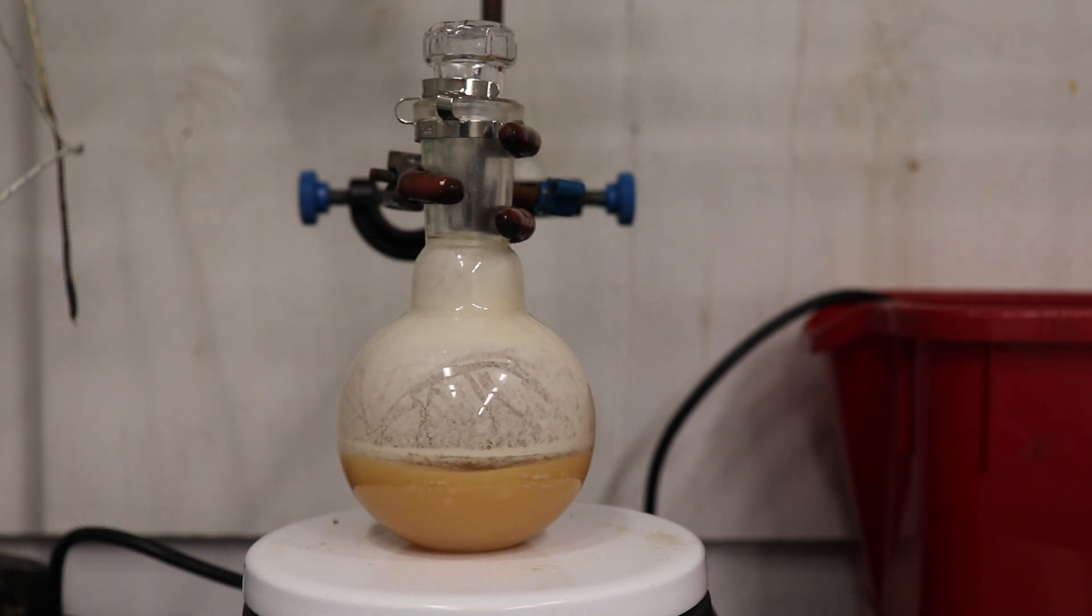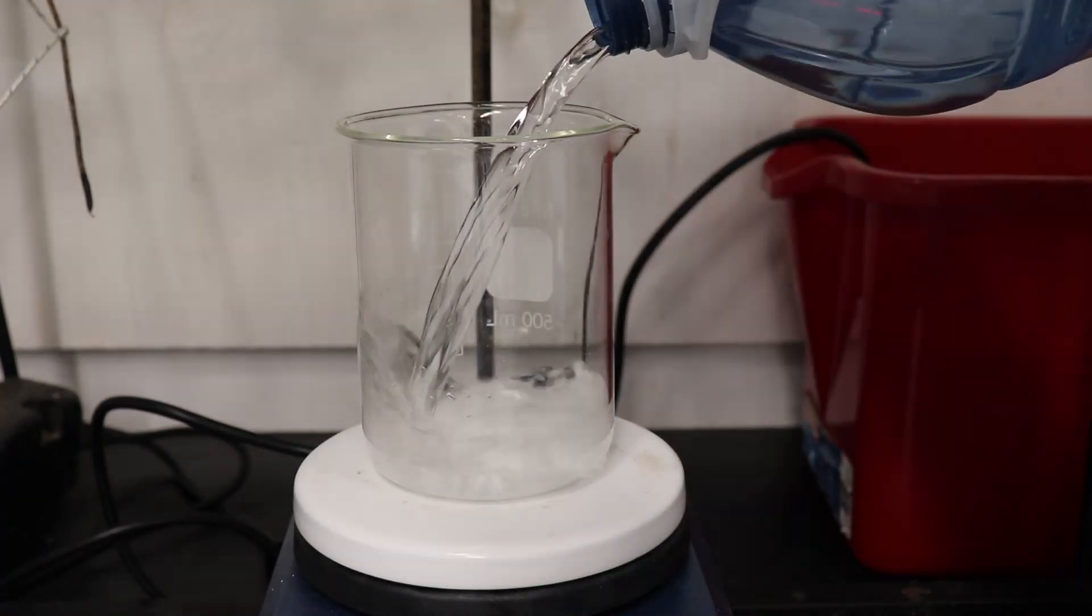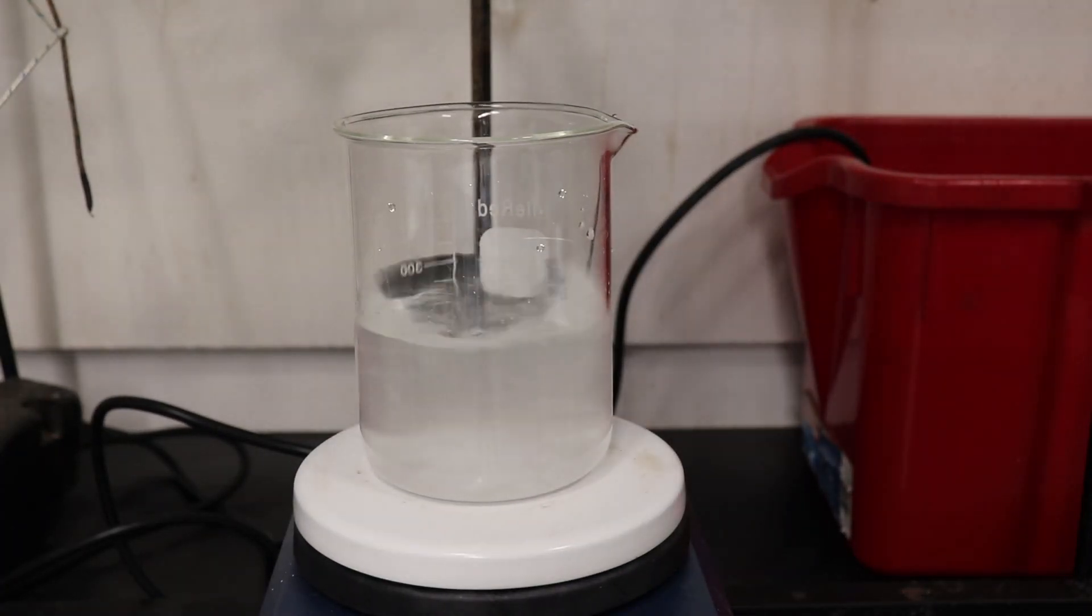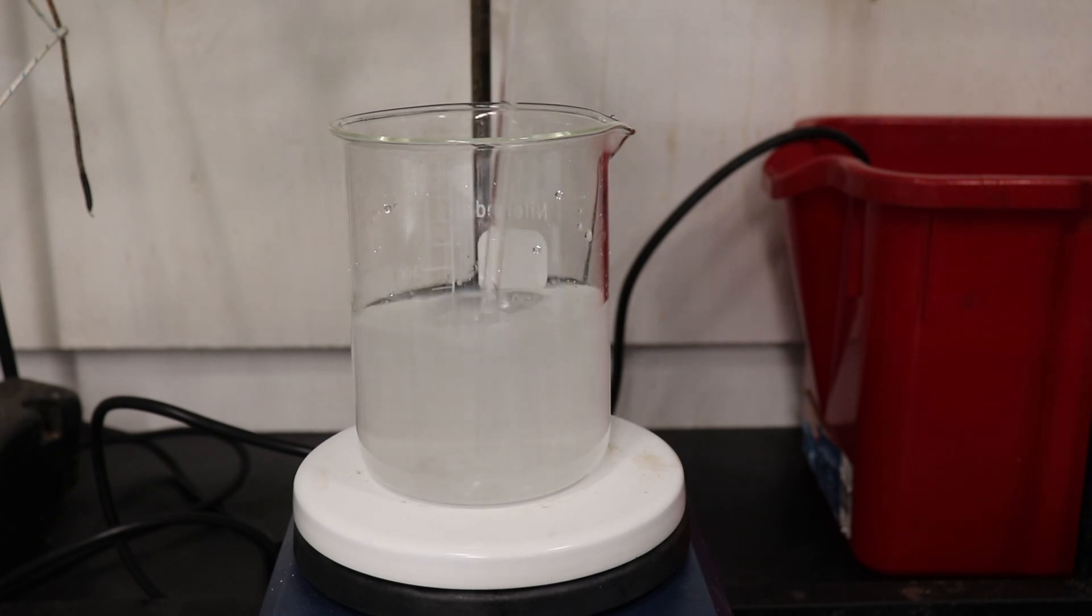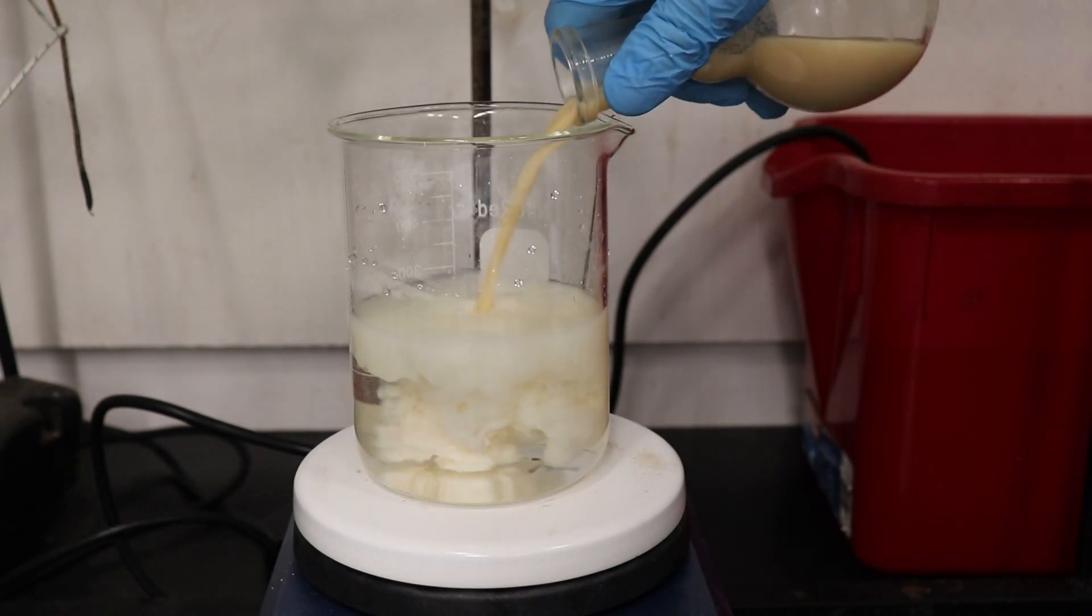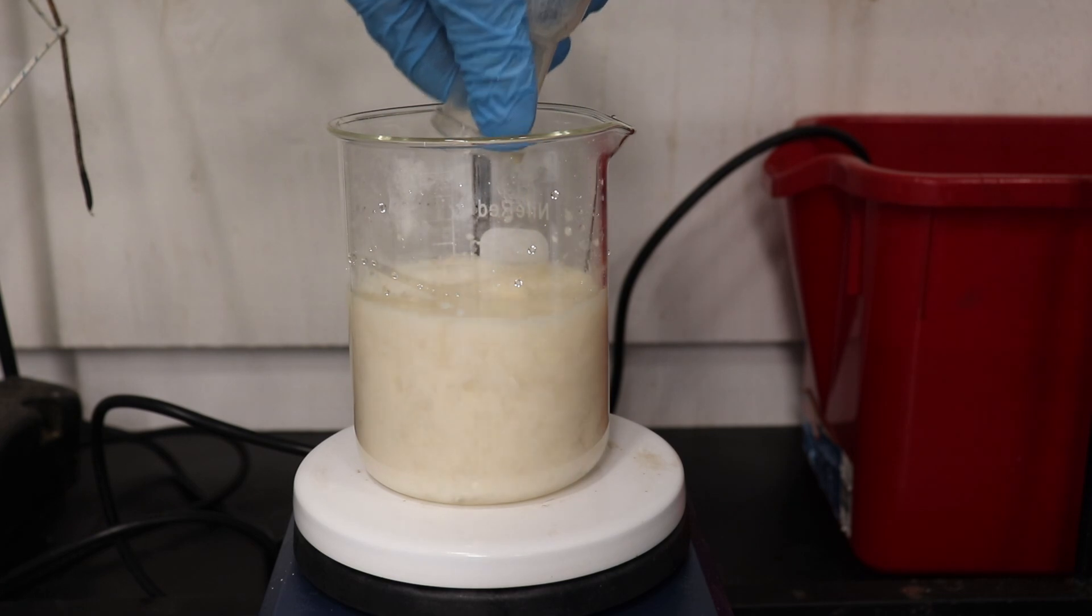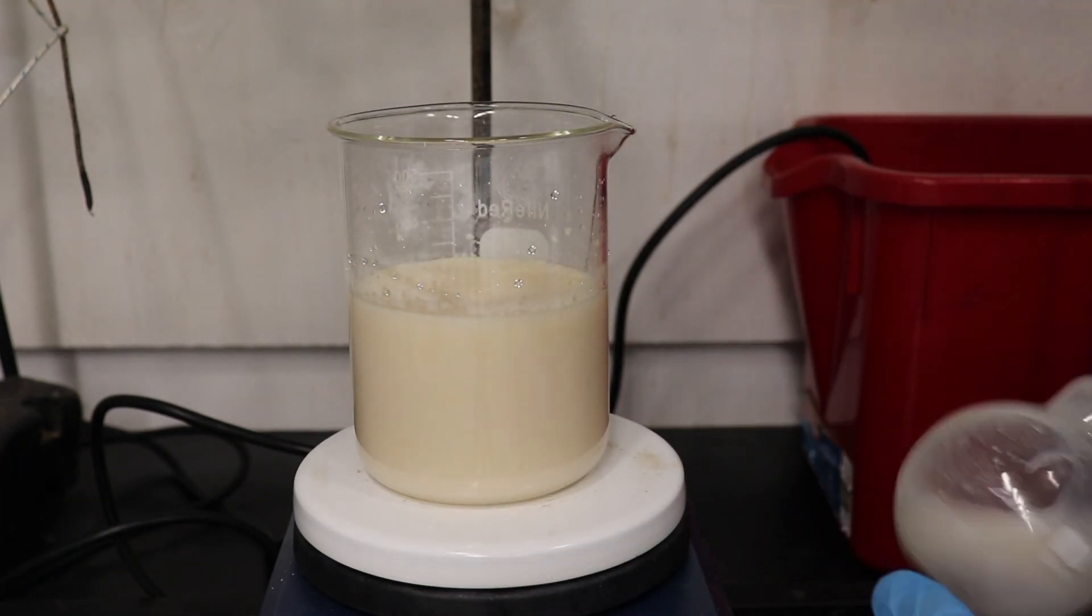After the 72 hours had elapsed, a precipitate of 2-methoxynaphthalene is seen in the flask. 250 milliliters of a 5% solution of sodium hydroxide is prepared. Then, the contents of the flask are poured into the sodium hydroxide solution and stirred for 1 hour, which serves to remove any unreacted 2-napthol.